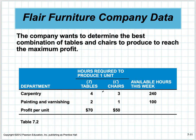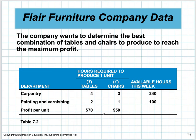Each table yields a profit of $70 and each chair earns $50. The company wants to determine the best combination of tables and chairs to reach maximum profit. The variables are T for tables and C for chairs. Carpentry: a table takes four hours, a chair takes three, with 240 hours available. Painting and varnishing: a table takes two, a chair takes one, with 100 hours available.